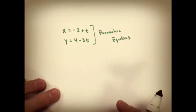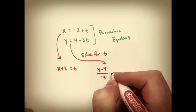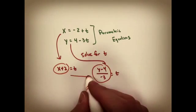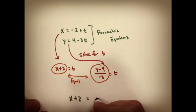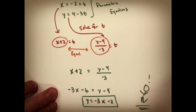Last example, if I give you two parametrics and ask you to write in slope-intercept form, the easiest way is to take each one to solve for t. Since you know those are both equal to t, you set the two parts equal to each other and solve, and you've got your equation in slope-intercept form.